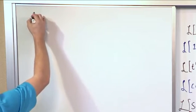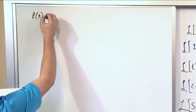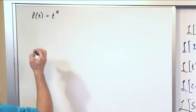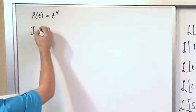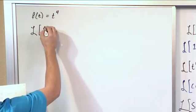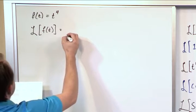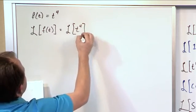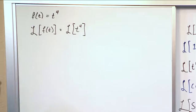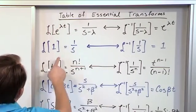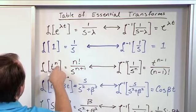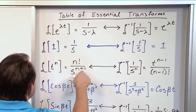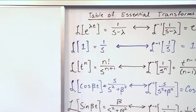So let's say that we want to find the Laplace Transform of the function of time t to the fourth. So that's f of t is equal to t to the fourth. The way you would do that is you would say the Laplace Transform of f of t is equal to the Laplace Transform of t to the fourth. You go over to your table of Laplace Transforms and look for anything that matches. There it is — t to the power of n, which gives n factorial over s to the power of n plus 1. In this case, n is equal to 4.